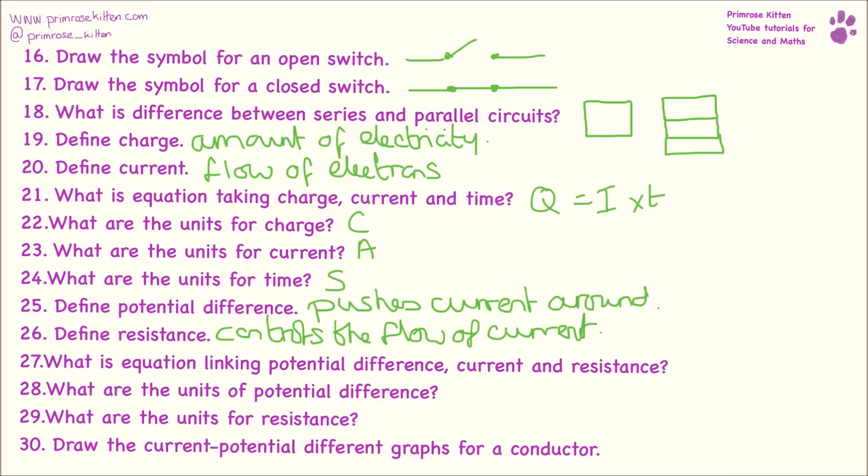The equation linking current, potential difference and resistance. Potential difference equals current times resistance. The units for potential difference are volts. The units for resistance are ohms.